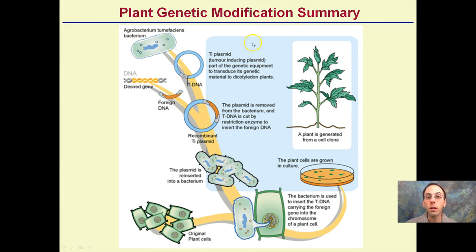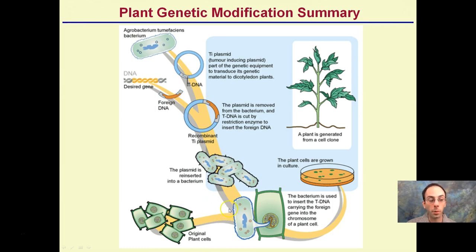Here's a quick plant genetic modification summary that mirrors general genetic biotech. Taking our plasmid and foreign DNA, cutting it with restriction enzymes to generate sticky ends, joining them, mass multiplying, then using agrobacterium to insert the gene of interest into original plant cells. We then screen and select for cells that carry our gene of interest, and grow a plant from that which will produce the particular protein we're interested in.